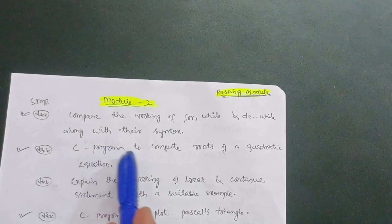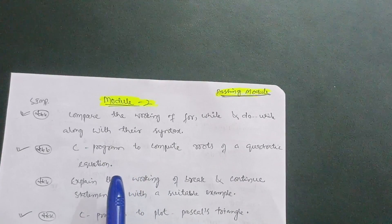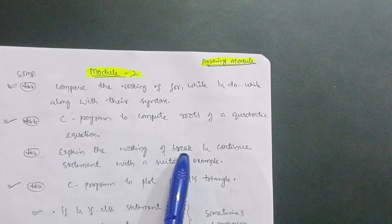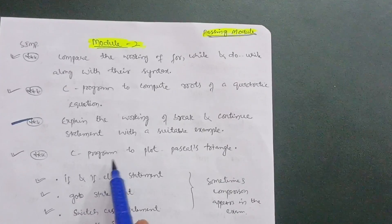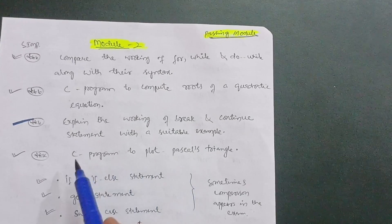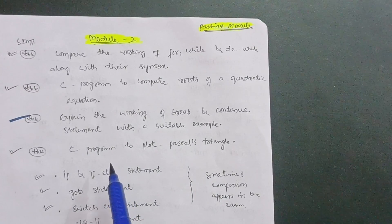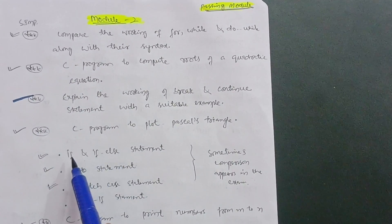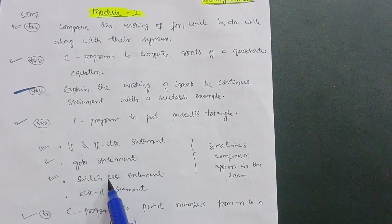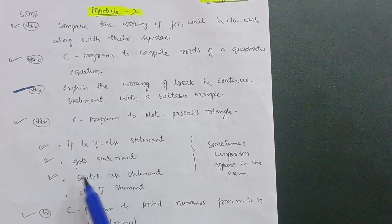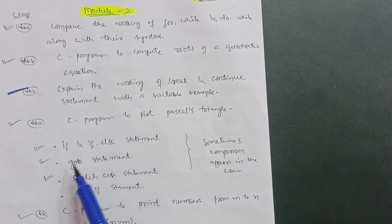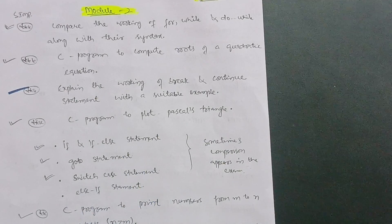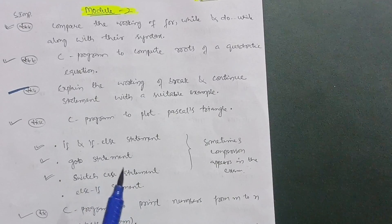Next, write a C program to compute the roots of a quadratic equation — this is the most important program in module two, and it is also in the syllabus. Explain the working of break and continue statements with a suitable example — again a super important question. Next, write a C program to plot Pascal's triangle. You also need to cover the if, if-else, goto, switch-case, and else-if statements. Sometimes they will ask you to differentiate between if-else and goto, or else-if and switch-case.